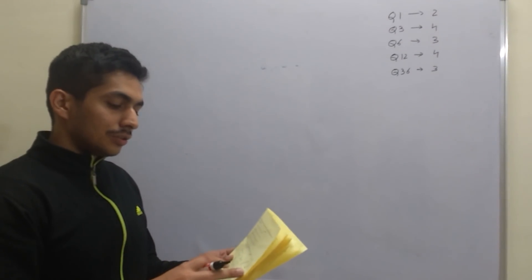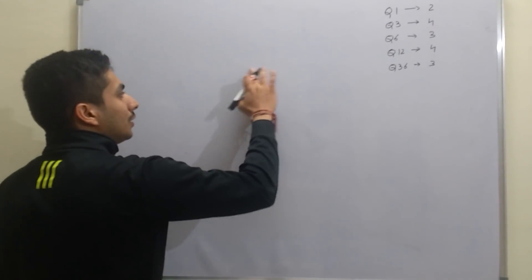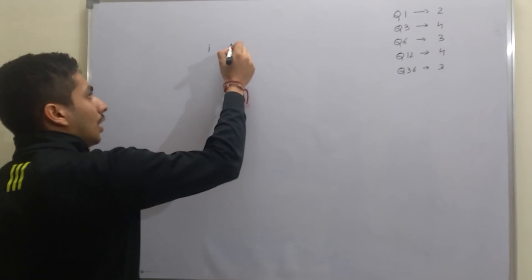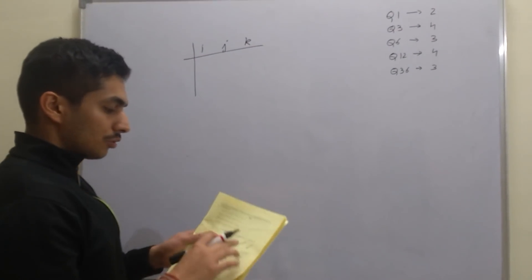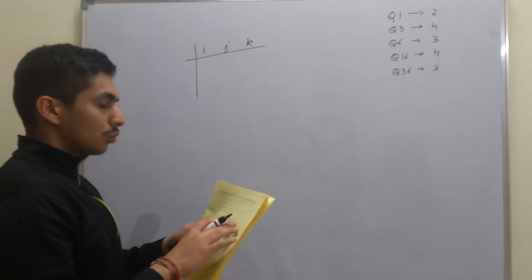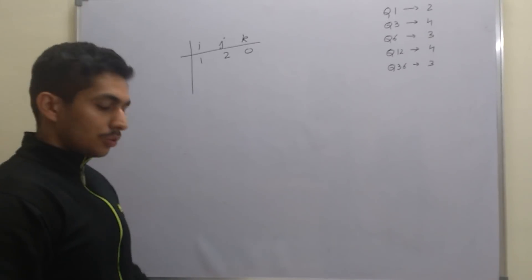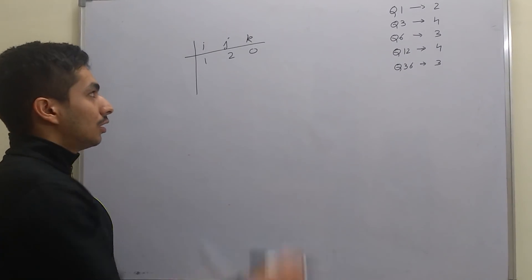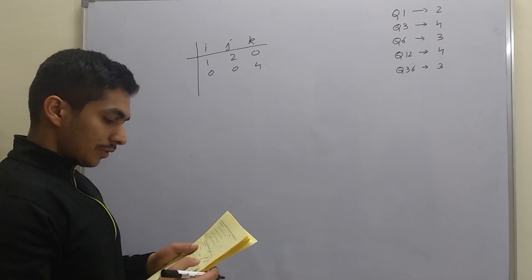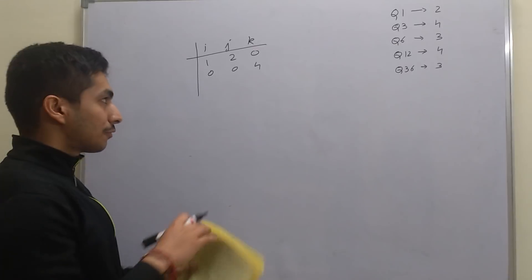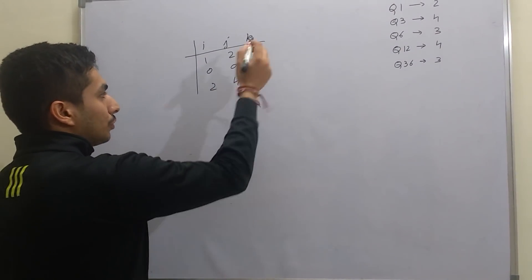You just have to draw the determinant with i, j, k. Vector a is given as 1i + 2j, so the values are 1, 2, and k is not mentioned so k = 0. Vector b is given as only 4k, so the i and j coordinates are 0 and k is 4. Vector c is given as 2i + 4j, so 2, 4, and again the k coordinate is 0.